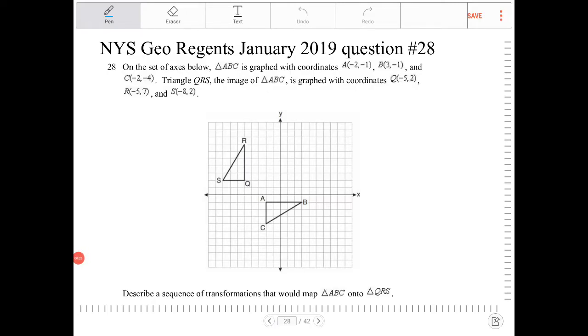On the set of axes below, triangle ABC is graphed with coordinates A(-2, -1), B(-3, -1), and C(-2, -4).